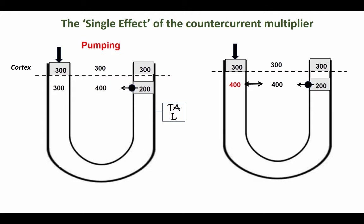The salt is picked up from the thick ascending limb and pumped into the interstitium, and in doing so they are going to create an osmotic gradient. In most mammals, it will be approximately 200 milliosmoles.